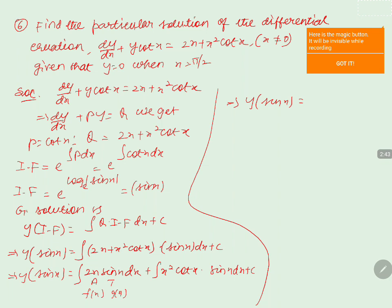Applying integration by parts to 2∫x·sin(x) dx, we get 2·[x·(x²/2) - ∫cos(x)·(x²/2) dx]. For the second integral, cot(x)·sin(x) simplifies because cot(x) = cos(x)/sin(x), so sin(x) cancels, giving ∫cos(x) dx.